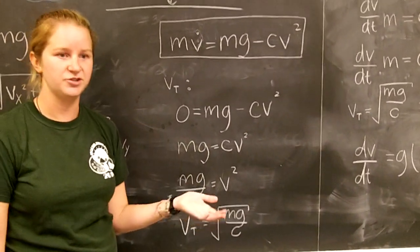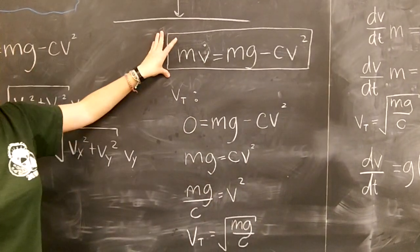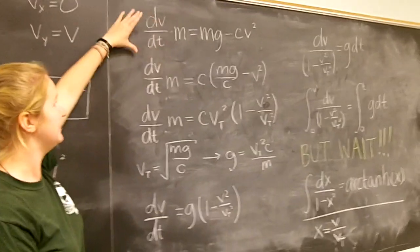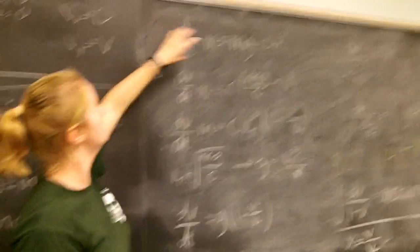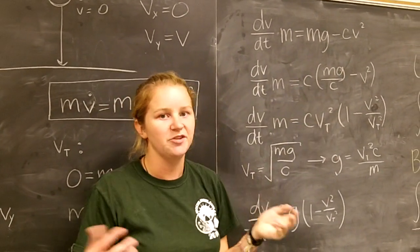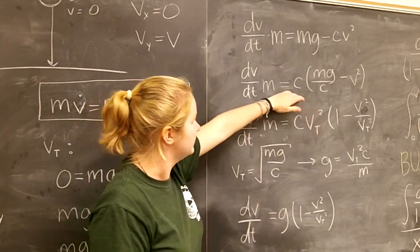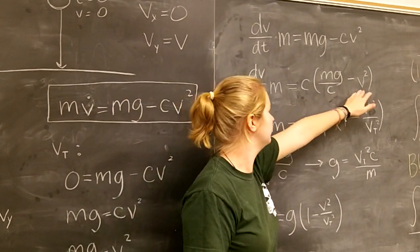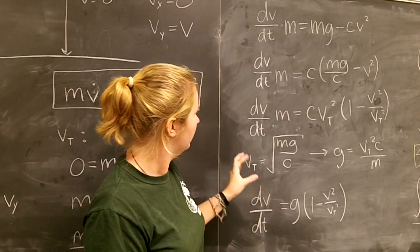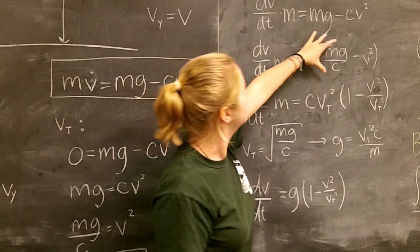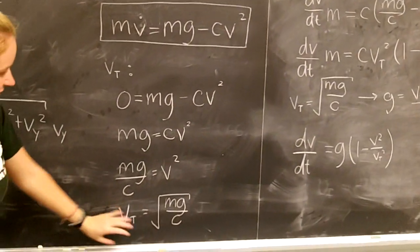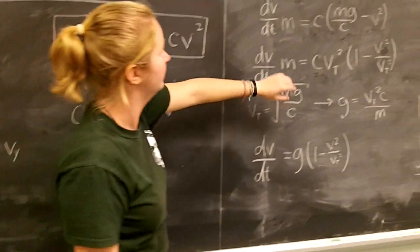So we can now write our differential equation from before in terms of our terminal velocity. So I've just written the v dot as dv/dt to make it easier in the future. So we have our equation like it was before. To try to get the terminal velocity term into it, I've factored out the C, and then I've divided both of these by vt and factored that out, vt squared. And then we know that because this term right here is, if this is vt, then take away the square root, this is vt squared.